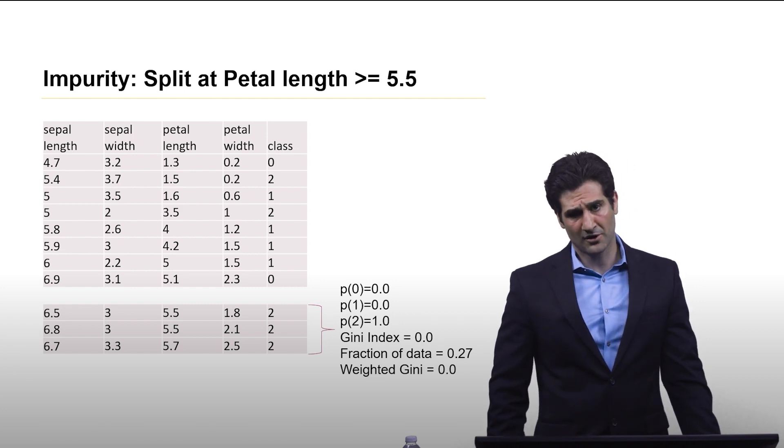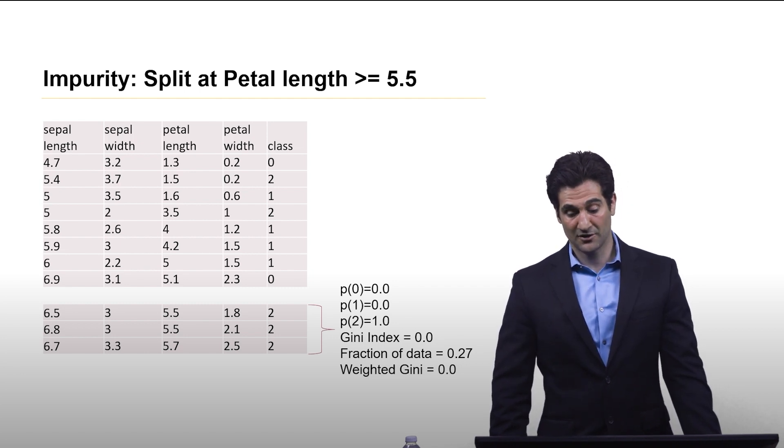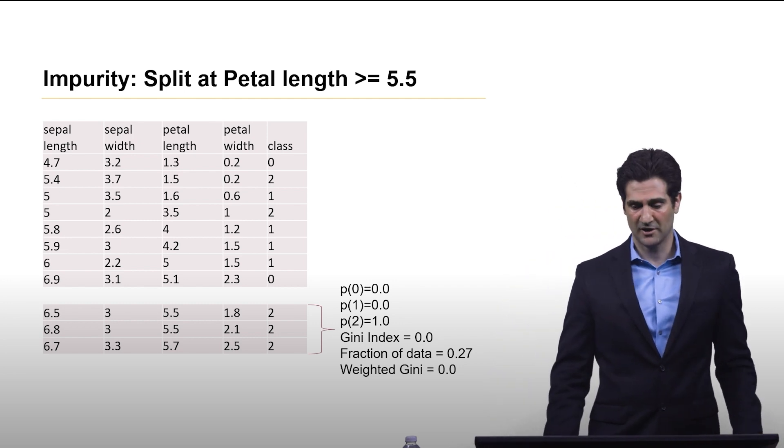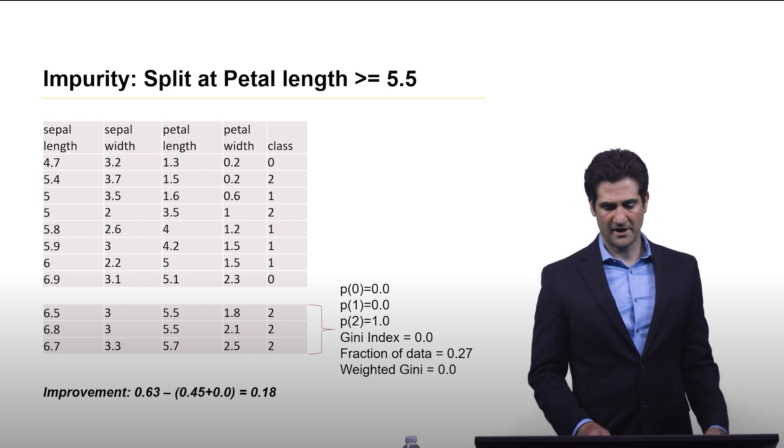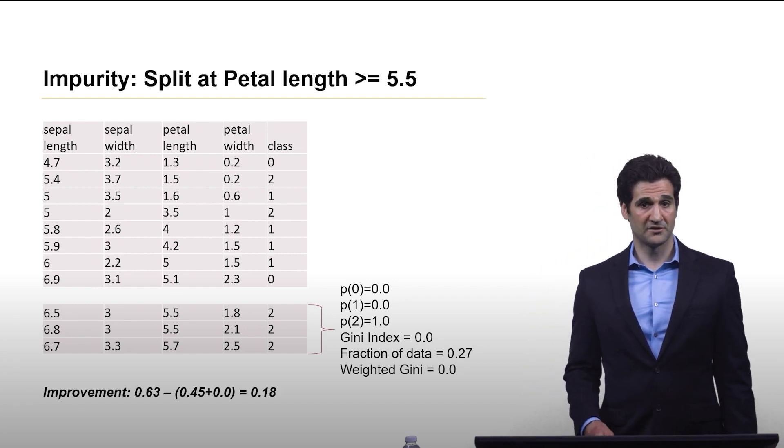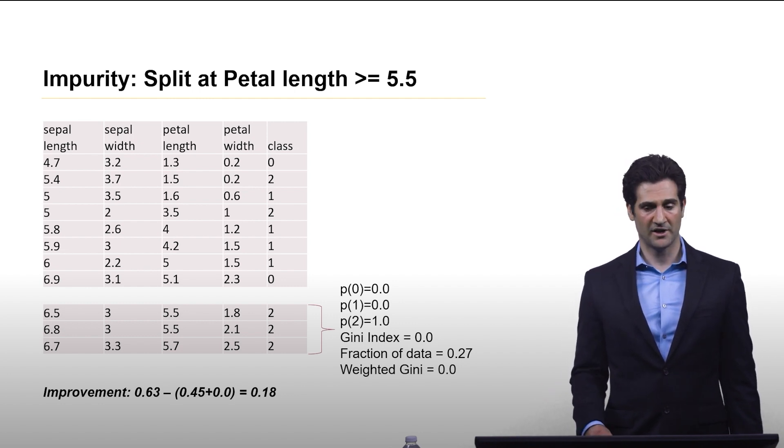Now let's look at the bottom portion of the data. This is very pure, because everything in here has a label of 2. So we have 0, 0, and 1, and the Gini index has dropped all the way down to 0. This is 100% pure, and it makes sense, because they all have the same label. So weighted Gini is 0. So now when we compute this, we see a much greater improvement in the Gini index. It dropped now by 0.18.